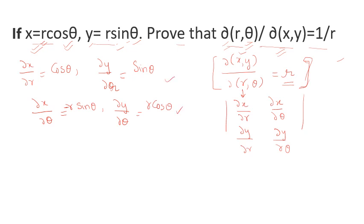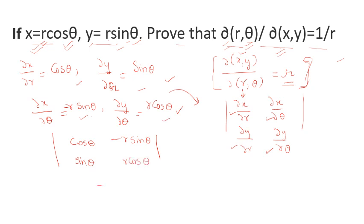Now put all four values into the Jacobian determinant. So dx/dr is cos theta, partial differentiation of x with respect to theta is minus r sine theta, partial differentiation of y with respect to r is sine theta, and partial differentiation of y with respect to theta is r cos theta. To solve the determinant, cross-multiply with a negative sign in between: r cos theta multiplied by cos theta, then minus the product of the other diagonal.